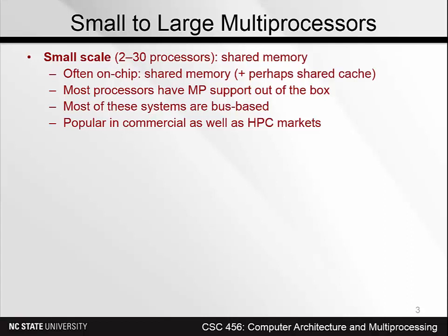Most processors today have multiprocessor support out of the box, which means you don't have to add anything to them to support various multiprocessor organizations, including support for cache coherence. That tends to be built in in most processors today.